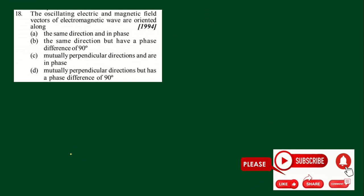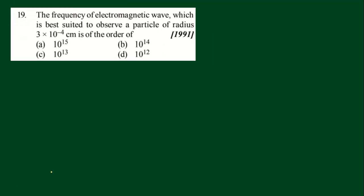We can move with question number 18. The oscillating electric and magnetic field vectors of electromagnetic waves are oriented. That is a very important concept. Moving to question number 19, which discusses a particle of radius 3 into 10 to the power of minus 4 cm.